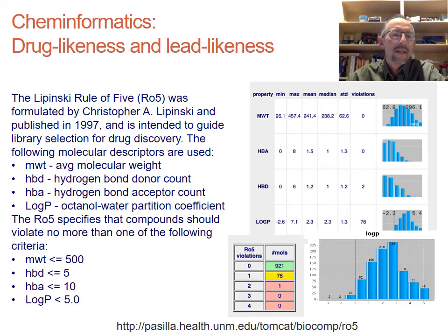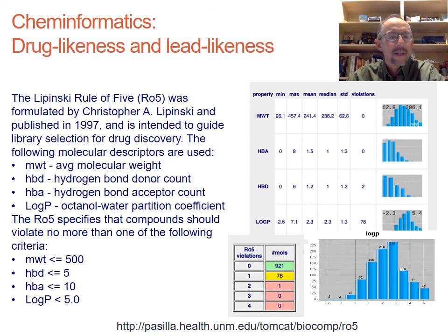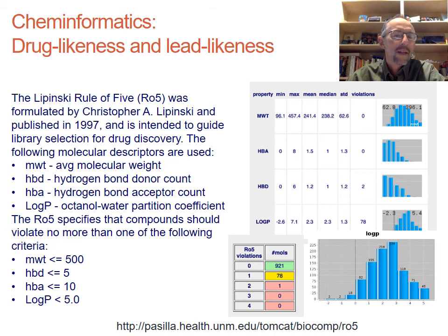The descriptors included in the Rule of Five are molecular weight, a count of hydrogen bond donors, hydrogen bond acceptors, and logP — the octanol-water partition coefficient — which gives a sense of how a drug will be partitioned in an organism between watery and fatty tissues.